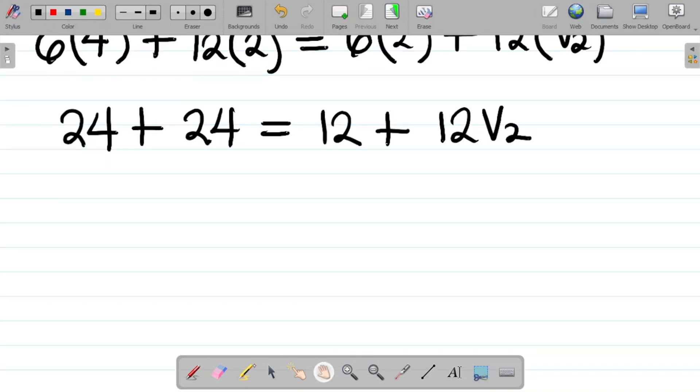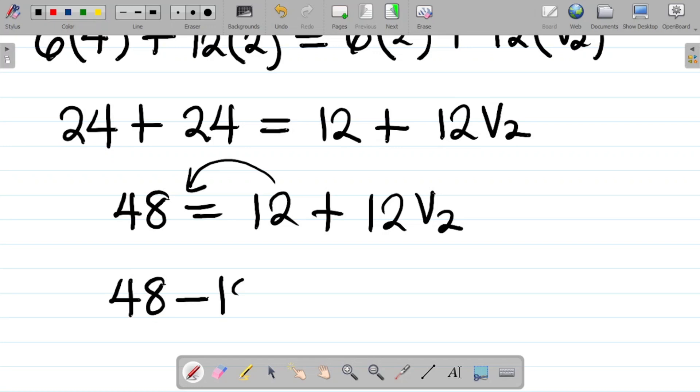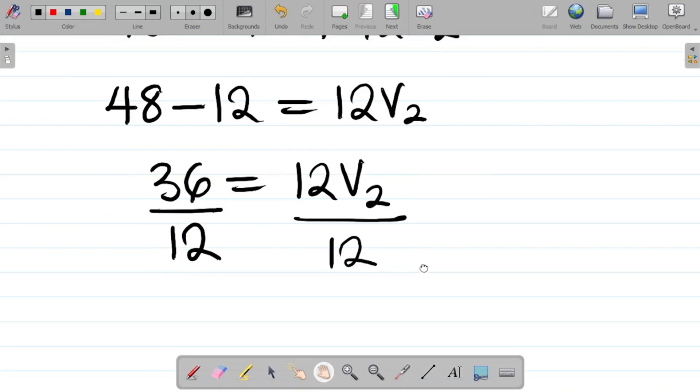Let's solve this. 24 plus 24 gives you 48. So I have 48 equals 12 plus 12v2. We'll have to move 12 over here. That becomes 48 minus 12 equals 12v2. 48 minus 12 gives you 36 equals 12v2. To get v2, I'll divide here by 12, also divide here by 12.